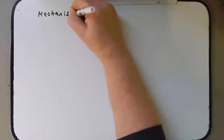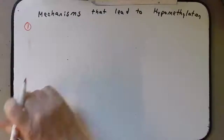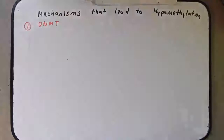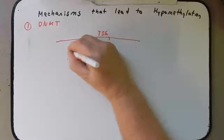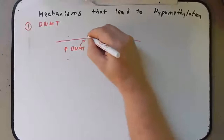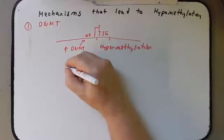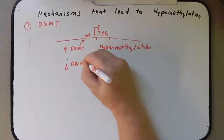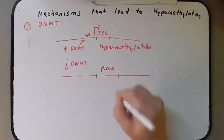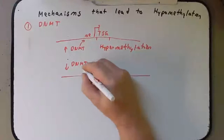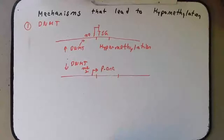Next I want to talk about mechanisms that lead to hypomethylation, and I'm going to talk about three main mechanisms. The first has to do with DNMT. Remember that overexpression of DNMT was enough to methylate regions and turn off the tumor suppressor gene — that was hypermethylation. Hypomethylation, you might think, could be caused if you underexpressed the DNMT, where we would have our proto-oncogenes, and by under-methylating via decreased DNMT we would get less methylation of the promoter and therefore turn this gene on constitutively.